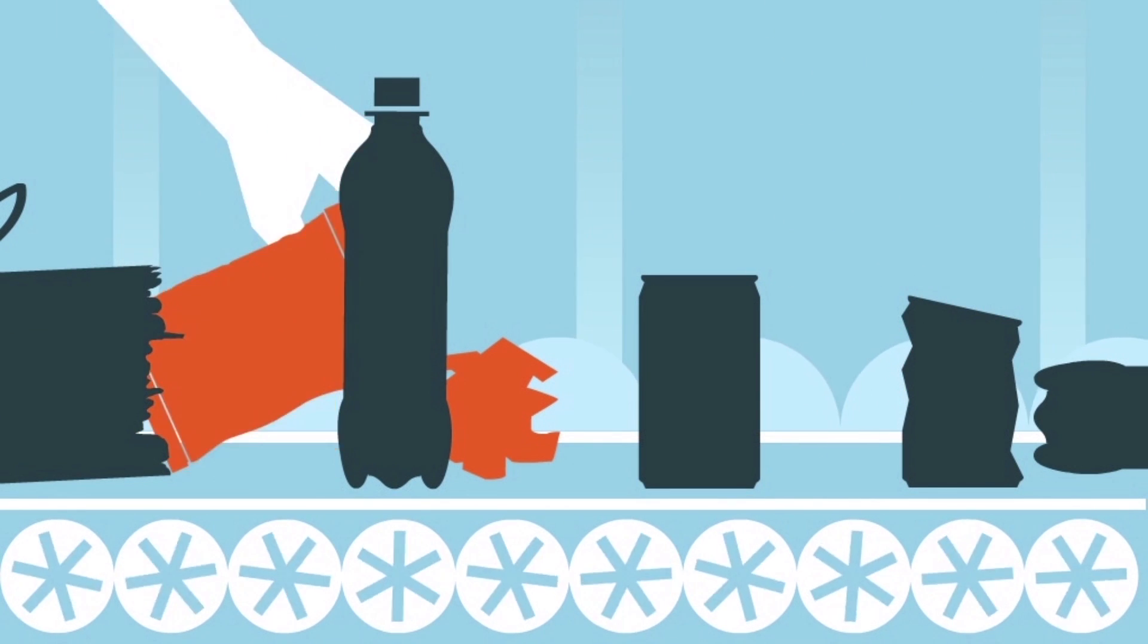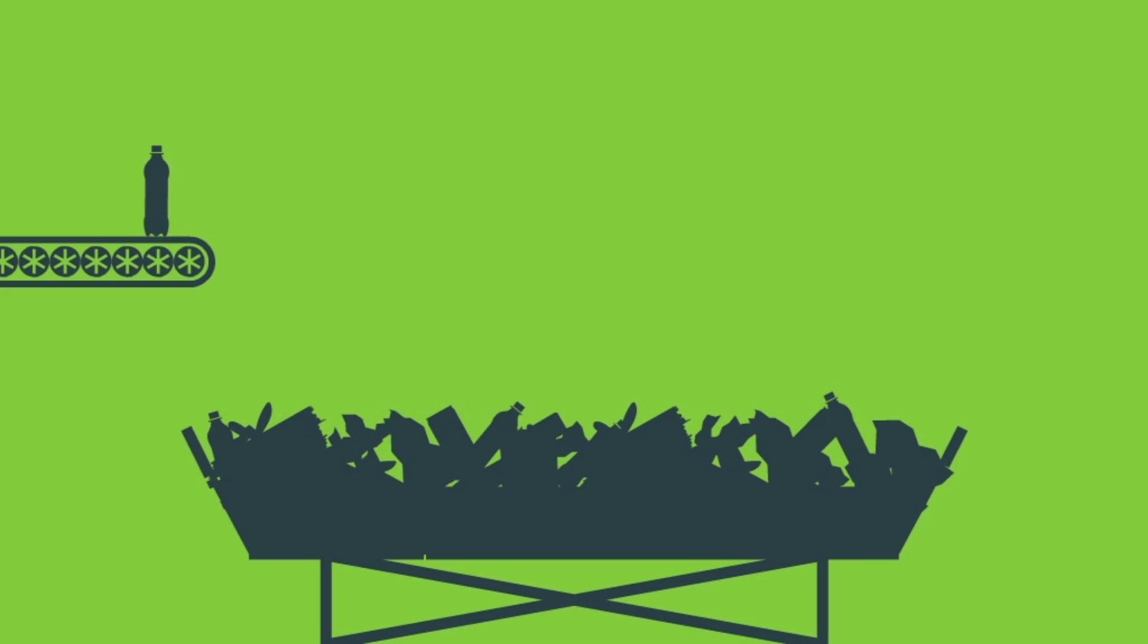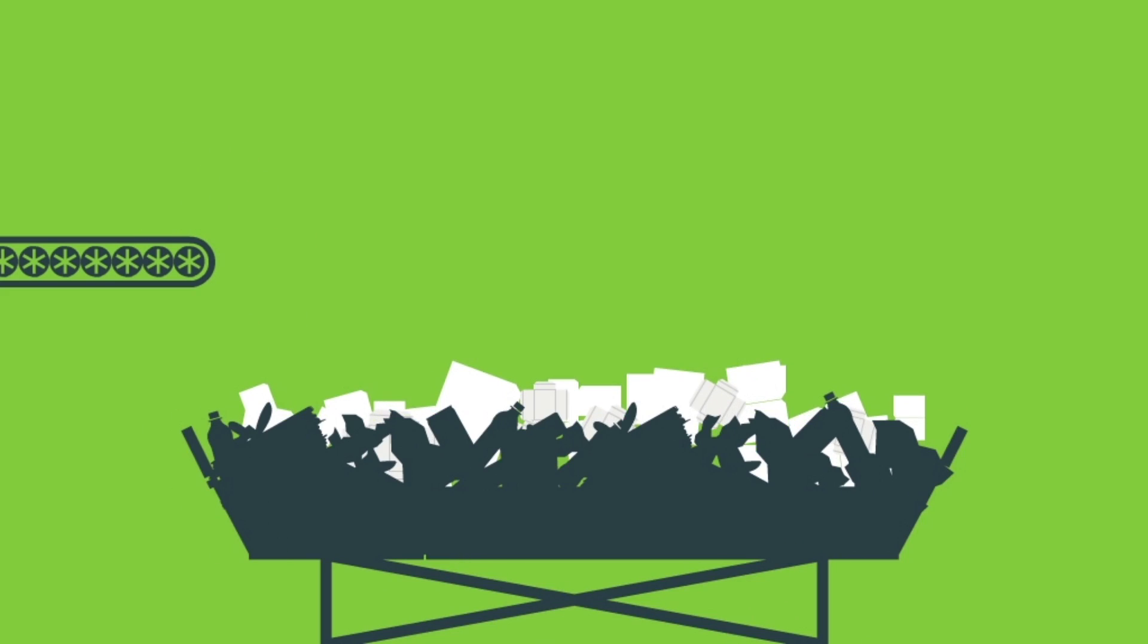First, non-recyclables are removed by hand. Then the material goes through a series of vibrating screens to isolate the cardboard and paper.